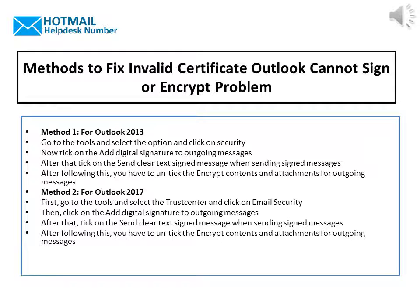Method 2, for Outlook 2017: go to the Tools and select Trust Sender and click on Email Security. Then click on Add Digital Signature to Outgoing Messages. After that, tick on the Send Clear Text Signed Message when sending signed messages.